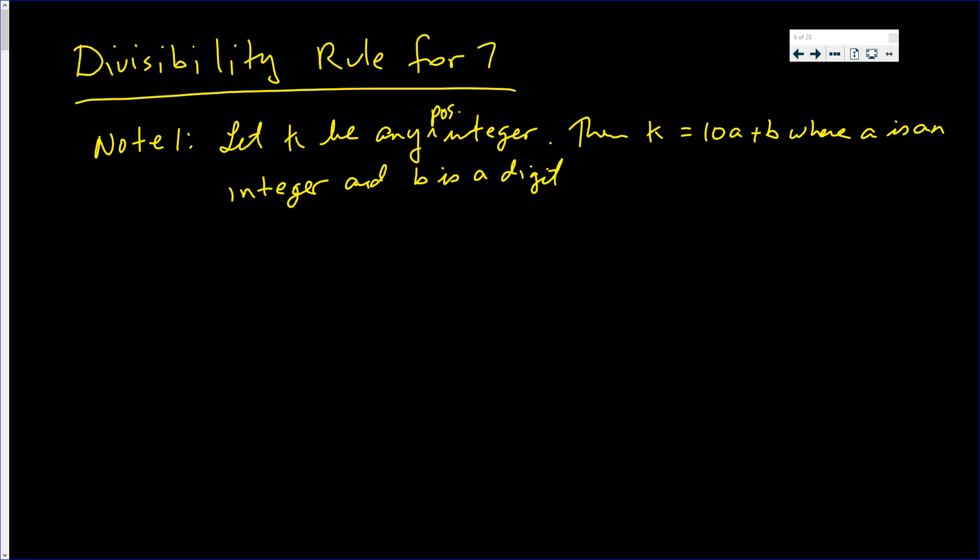If you don't believe that, just look at the following. If you have this number 7252, it is equal to 725 times 10, that's your a times 10, plus the digit b. Any number is a multiple of 10 plus the ones digit.